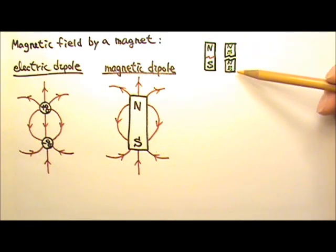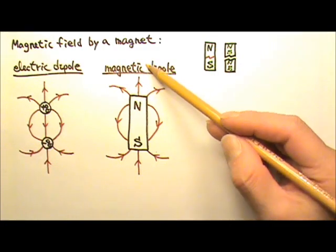It turns out that no matter how small the pieces we break the magnet into, we can never separate the north and south. Which means magnets only come in dipoles.